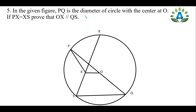In the given figure, PQ is the diameter of a circle with center O. If PX equals XS, prove that OX is parallel to QS. So in your question, PQ is a diameter given, and O is the center of the circle. We have to prove that line OX is parallel to line QS.